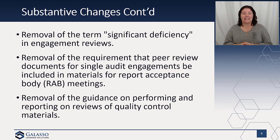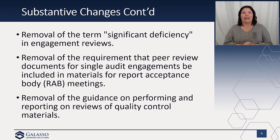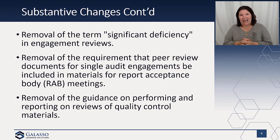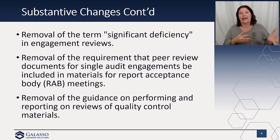There is also removal of the guidance on performing and reporting on reviews of quality materials. Soon that will not be permitted as a peer review option — you could now have an attest standard instead. Because we have these proposed clarified standards and changes to the quality control manual happening, they can have an attestation engagement on the material, but the guidance associated with performing and reporting on quality materials will no longer be an option once this becomes effective. That would be replaced by an attestation engagement instead.